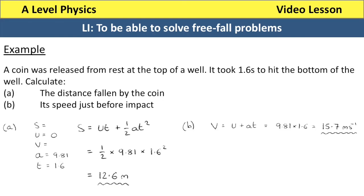A coin was released from rest at the top of a well. It took 1.6 seconds to hit the bottom of the well and we are asked to calculate the distance fallen by the coin. Like we did in the previous video, we begin by laying out our SUVAT and writing down S, U, V, A and T. Because the coin falls from rest, the value of U will be 0. The value of the acceleration is 9.81 because it is falling due to gravity on Earth, and the time is 1.6.